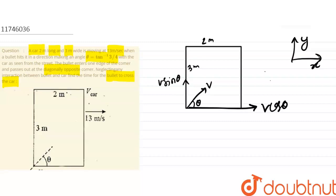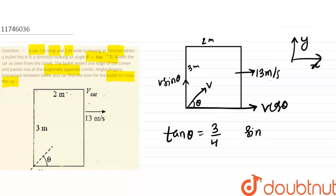V cos theta is V sin theta. The car is running at 13 meters per second. So sin theta is 3 by 4. Sin theta is 3 upon the square root of 3 squared plus 4 squared, which equals 5. So sin theta is 3/5. Similarly, cos theta is 4 upon 5.